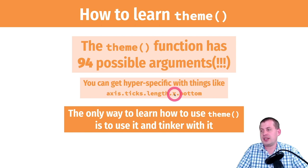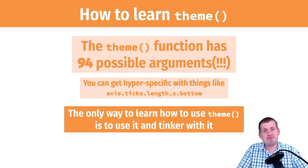You can get as detailed as this: if you want to just target the x-axis ticks on the bottom of the plot, there's an argument for that. You can turn those off or make them blue or whatever. The only way you're going to learn this is by tinkering with it, testing it, just trying to change things and seeing what happens.